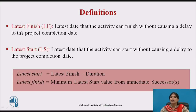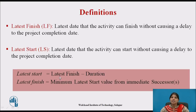The latest finish is the latest date that the activity can finish without causing a delay to the project completion date. The latest start means the latest date that the activity can start without causing a delay to the project completion date. Latest start is calculated as latest finish minus duration. If there are two values of latest start, you consider the minimum value from the immediate successor.